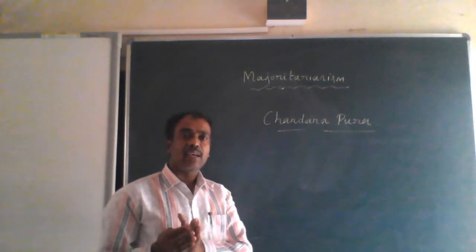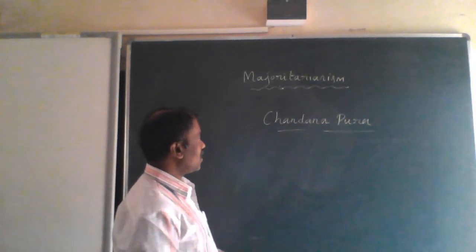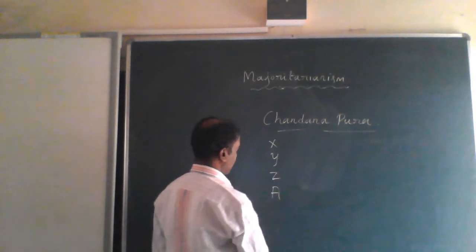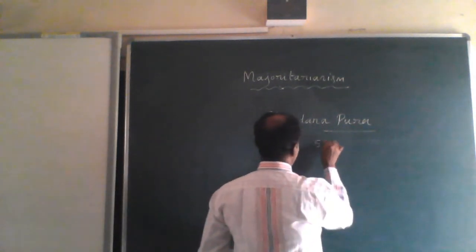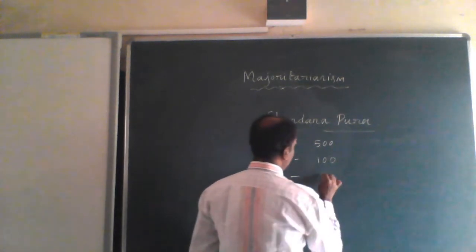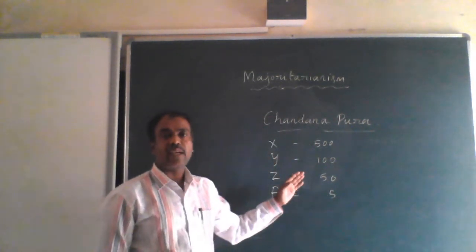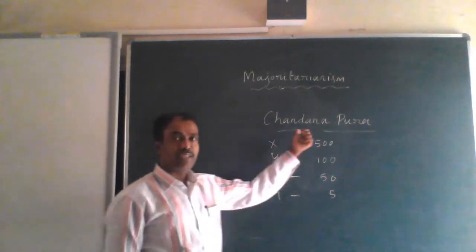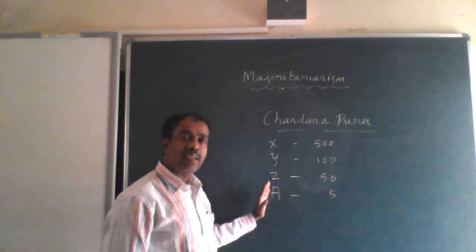In this village, there are different community people — especially different religions and even different caste people living together. We will take some of them: X, Y, Z, A — this indicates the different communities. Here, X are 500 families, Y only 100, Z the 50, and A only 5. This is an example to help you understand this concept.